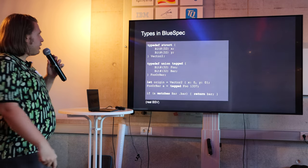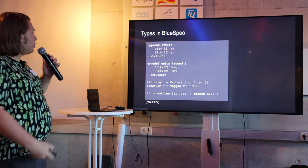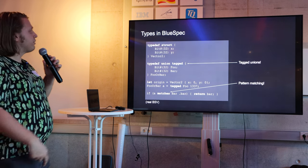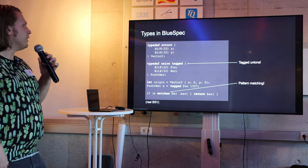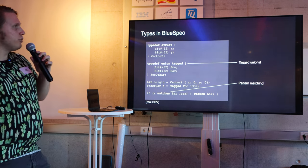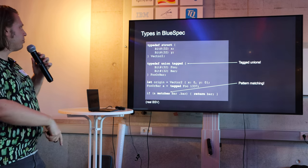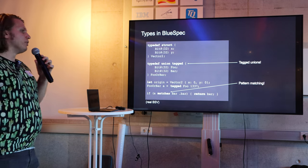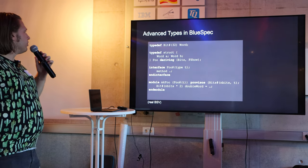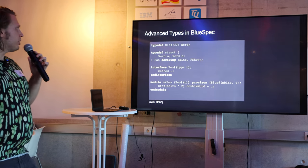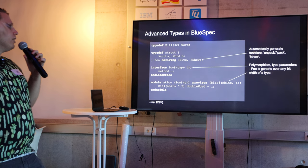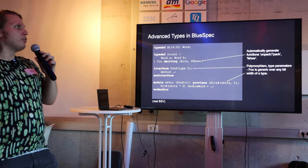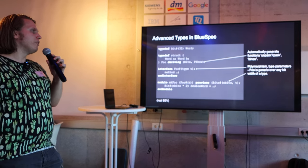You also have a significantly more complex type system than is available in most other HDLs. You have things like structs, you have tagged unions which are really nice, and because you have tagged unions you have functional programming style pattern matching, which means things like passing around op-code instructions is much nicer. You can also have much fancier stuff in your type system — like automatically generating properties, automatically generating code for things like packing and unpacking into bit values.